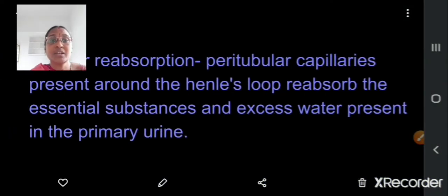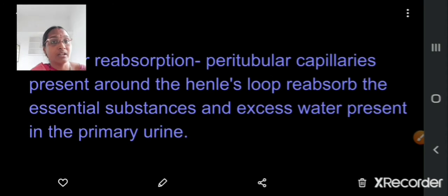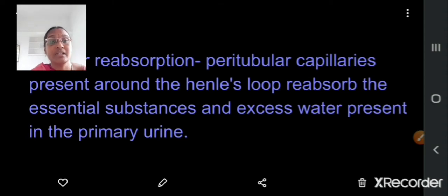The next step is tubular reabsorption. The peritubular capillaries present around the Henley's loop and also the proximal convoluted tubule, they reabsorb the essential substances and excess water present in the primary urine. The primary urine from the Bowman's capsule will enter into the proximal convoluted tubule. There, the primary urine, excess of water and available salts are absorbed into the blood by the peritubular capillaries.